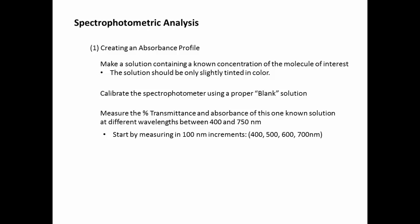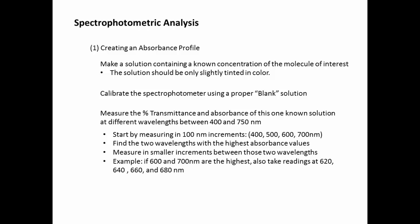Start by measuring in 100 nanometer increments. Start at 400, then 500, 600, and 700. Find the two wavelengths with the highest absorbance values. For example, if 600 and 700 are the highest absorbance values, you want to see if there's even higher values in between, so you'll also take additional readings at 620, 640, 660, and 680.